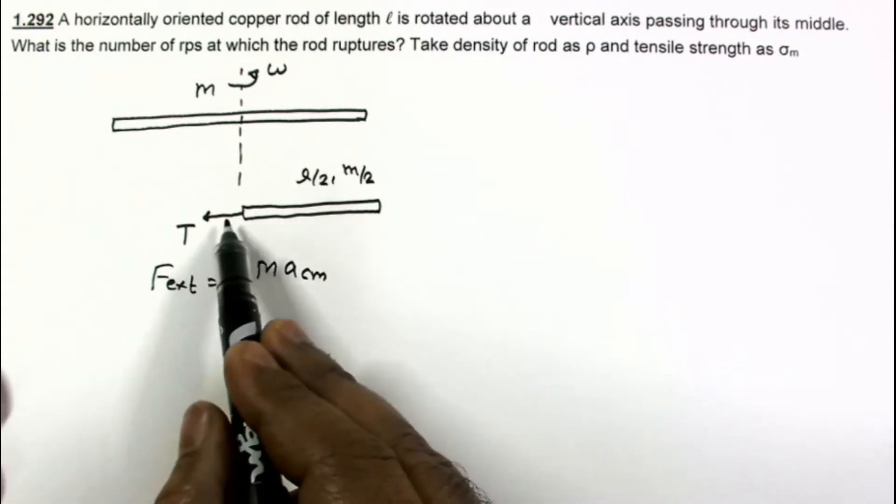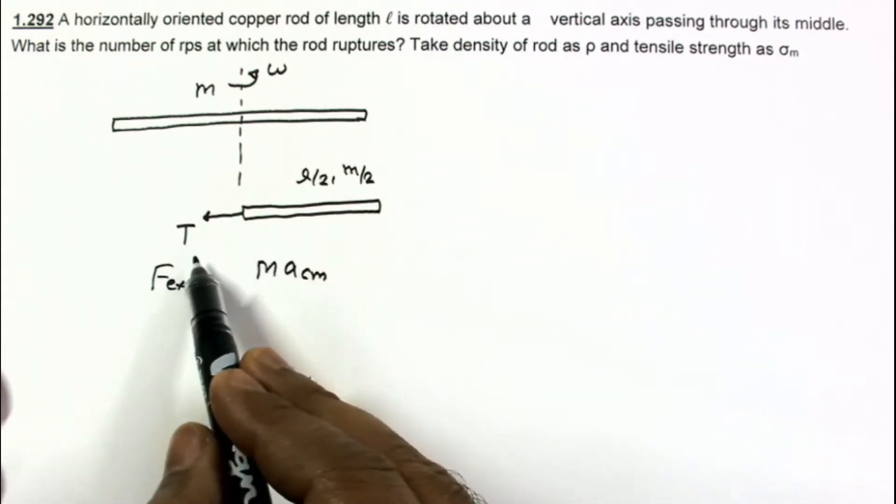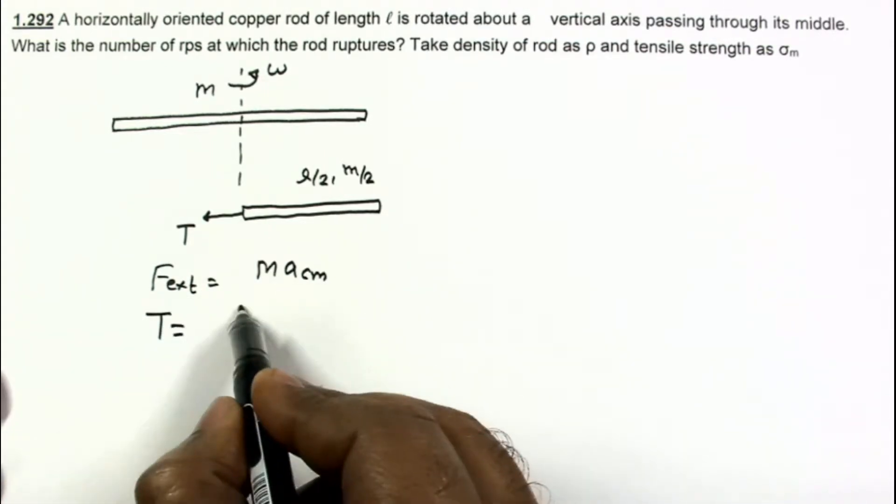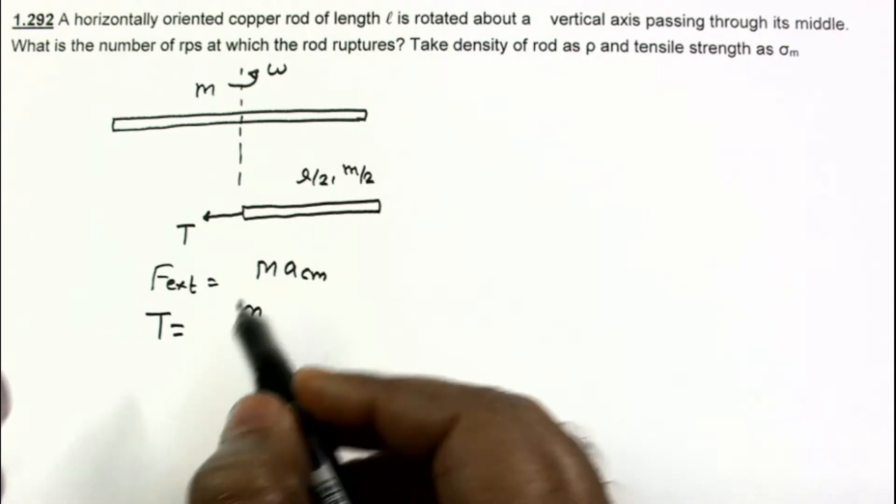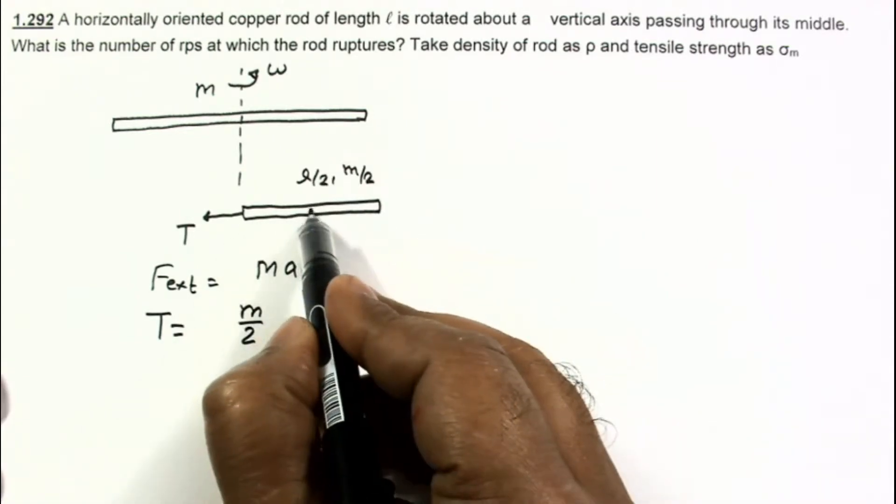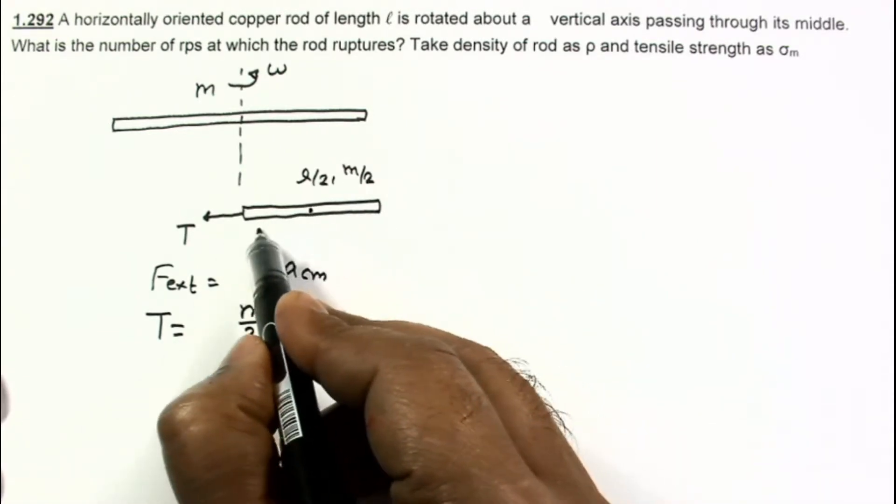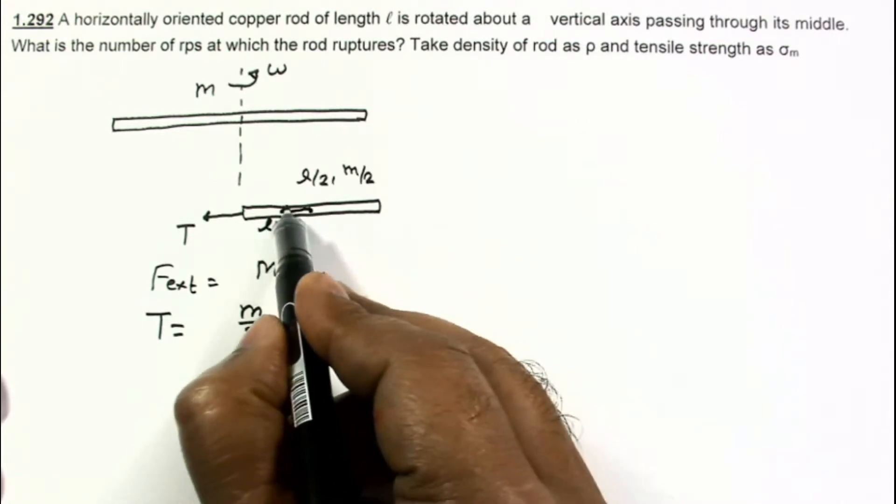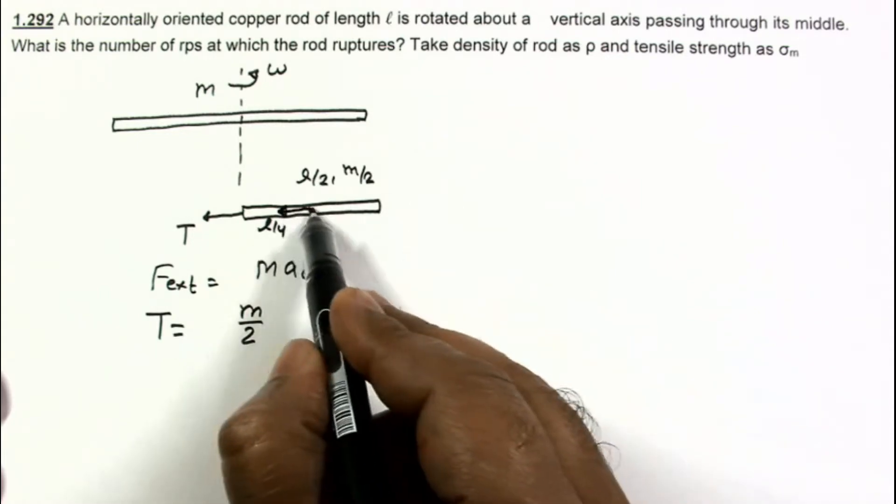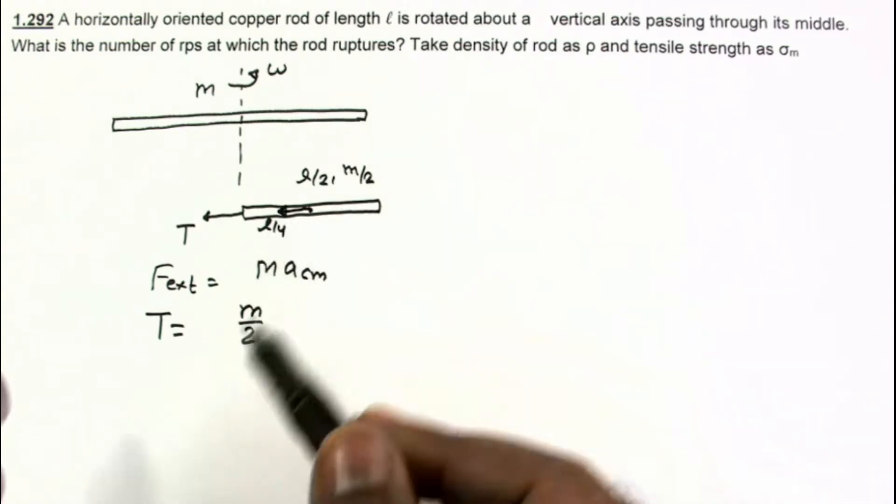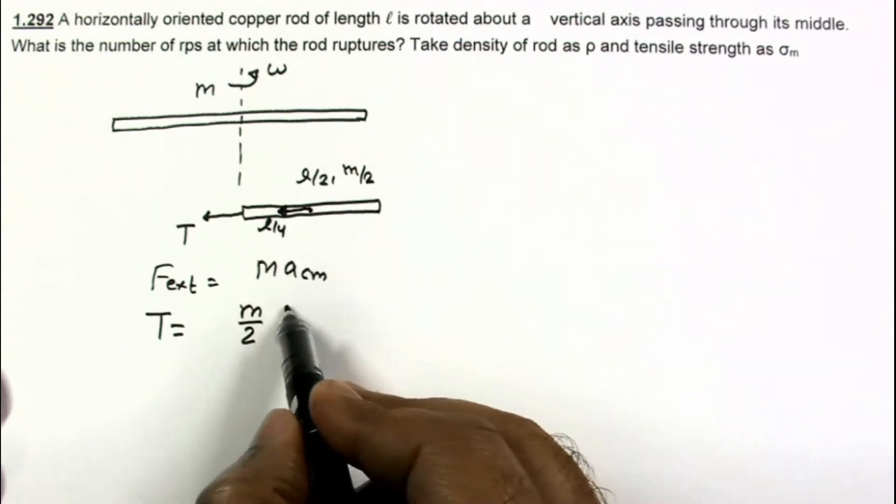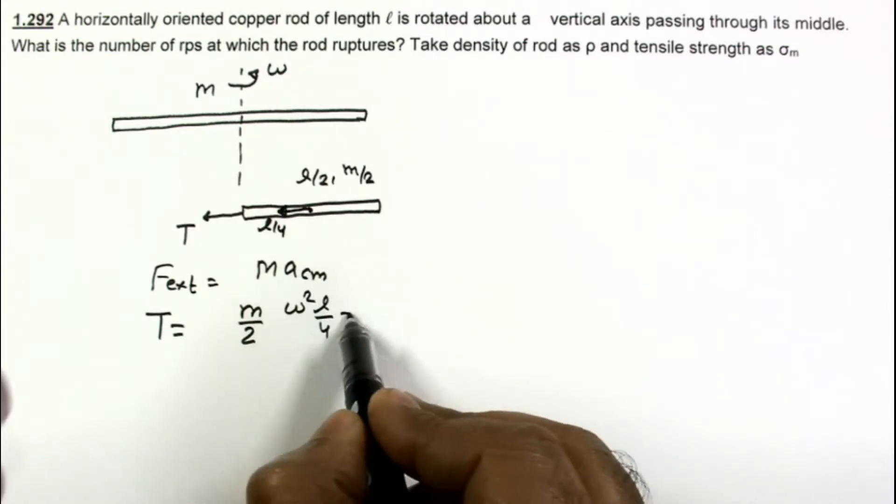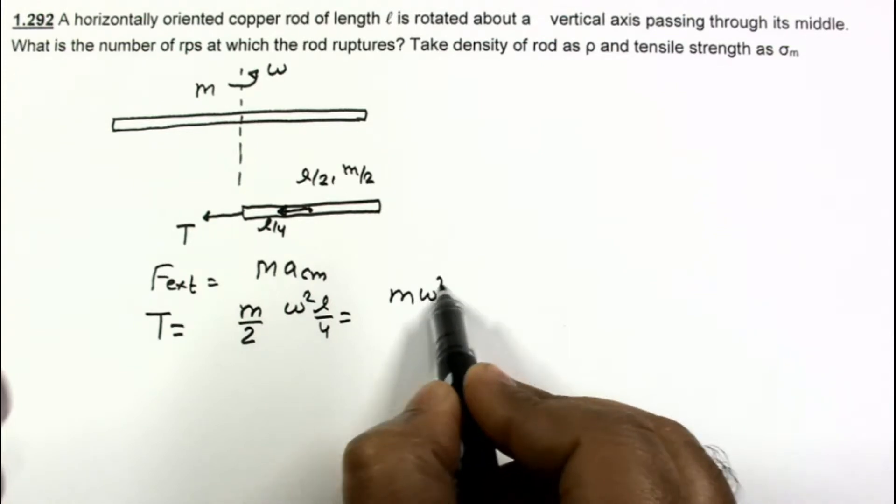This horizontal or radial external force on this part of the rod is T. Mass is m/2 and acceleration of center of mass is at distance l/4, and this center of mass should be accelerated. This acceleration equals the centripetal acceleration of the center of mass. Centripetal acceleration is ω² multiplied by l/4, so this is mω²l/8.